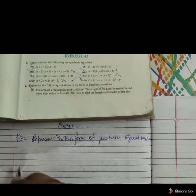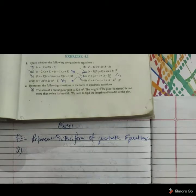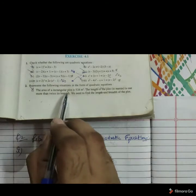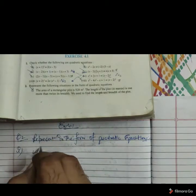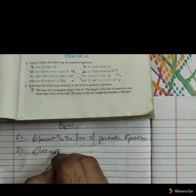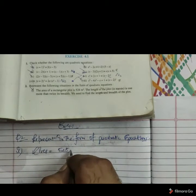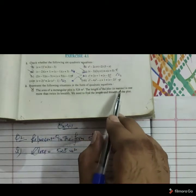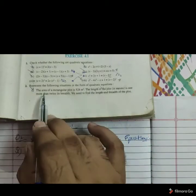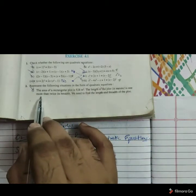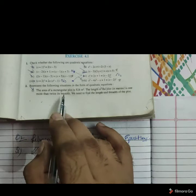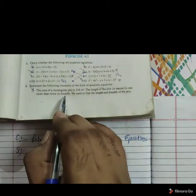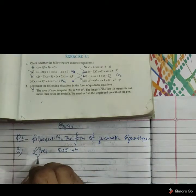Here first part is given as the area of a rectangular plot is 528 meter square. The length of plot which is in meters is one more than, means one extra as compared to twice. Twice means double of breadth. So first requirement is breadth here.